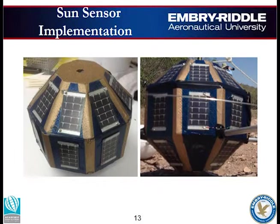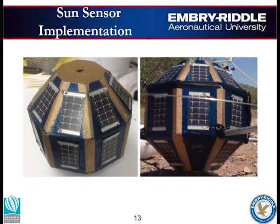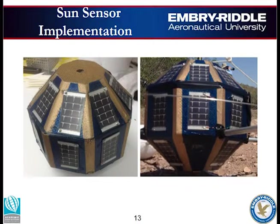To implement the sun sensor in our payload, we used a 26-sided structure. Each solar cell is oriented approximately 45 degrees to its neighbor. We implemented 23 solar cells in total—we didn't have solar cells on the top or bottom face, and because of a camera window, one face was left without a solar cell. So out of 26 sides, 23 solar cells were implemented.